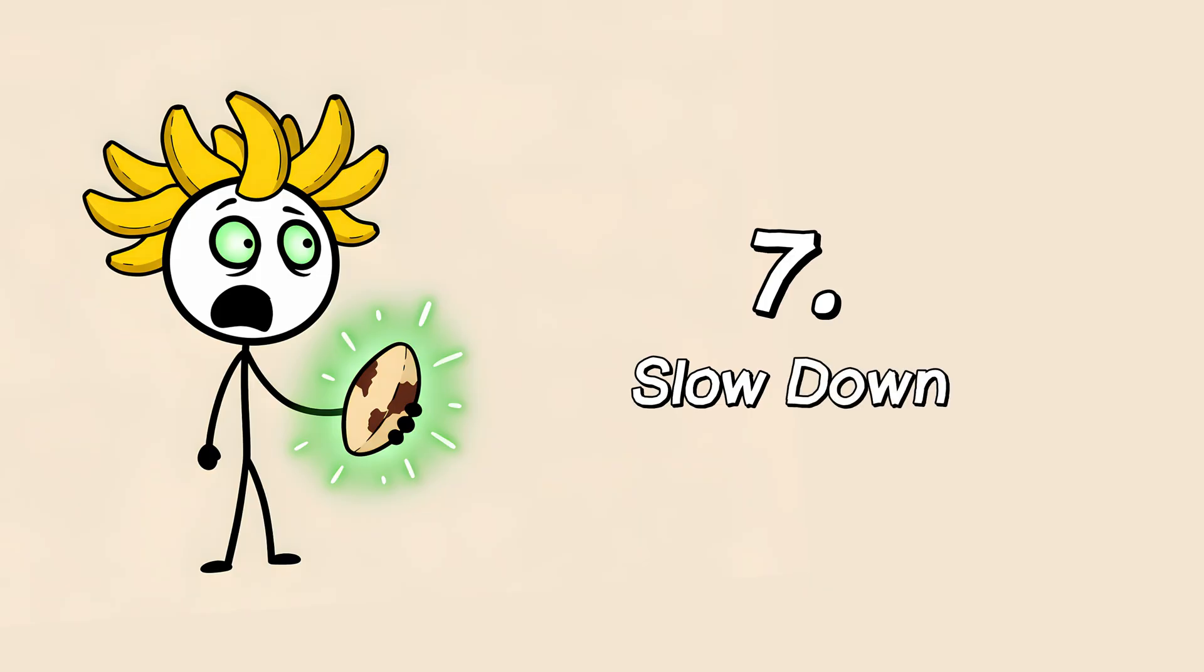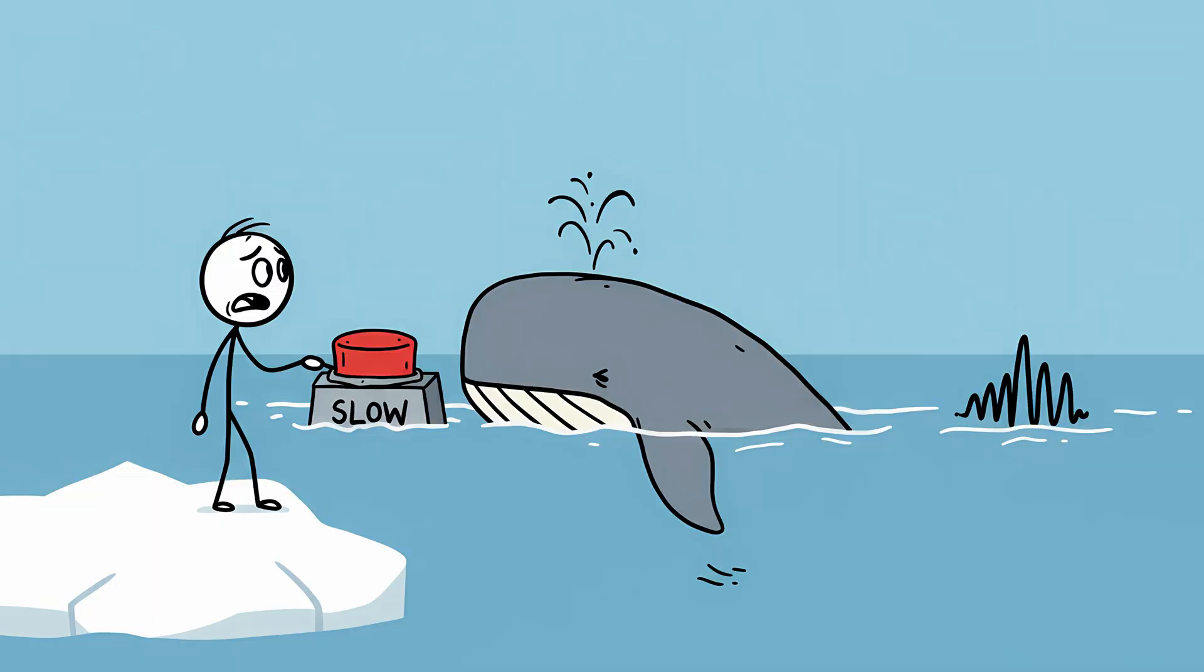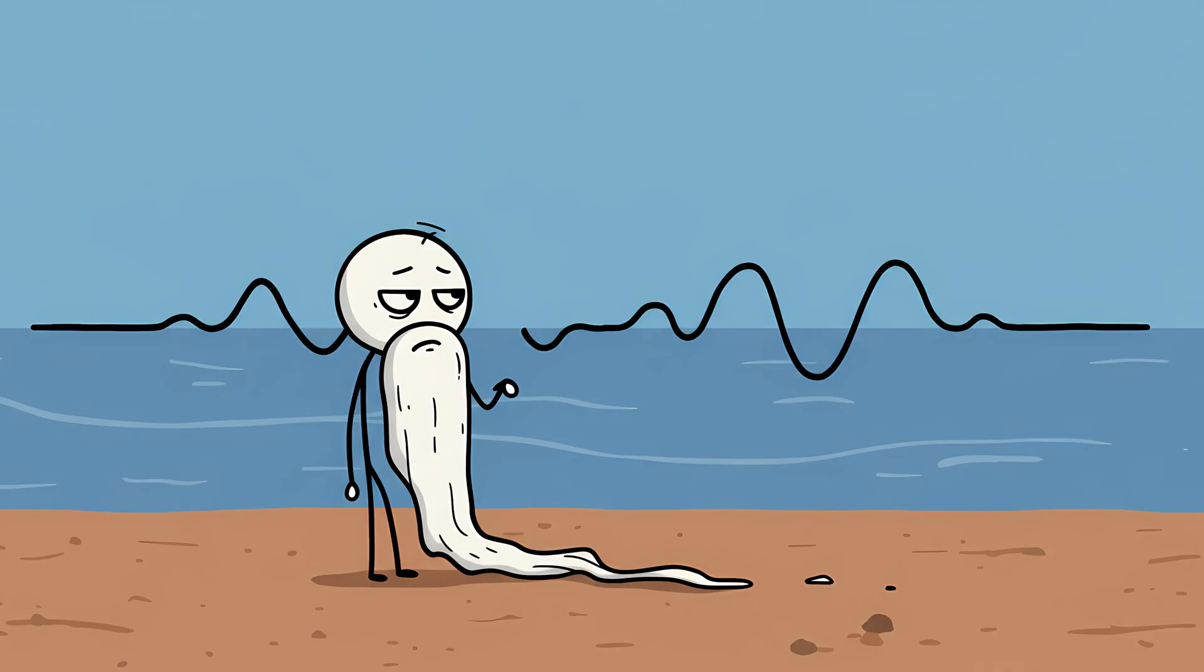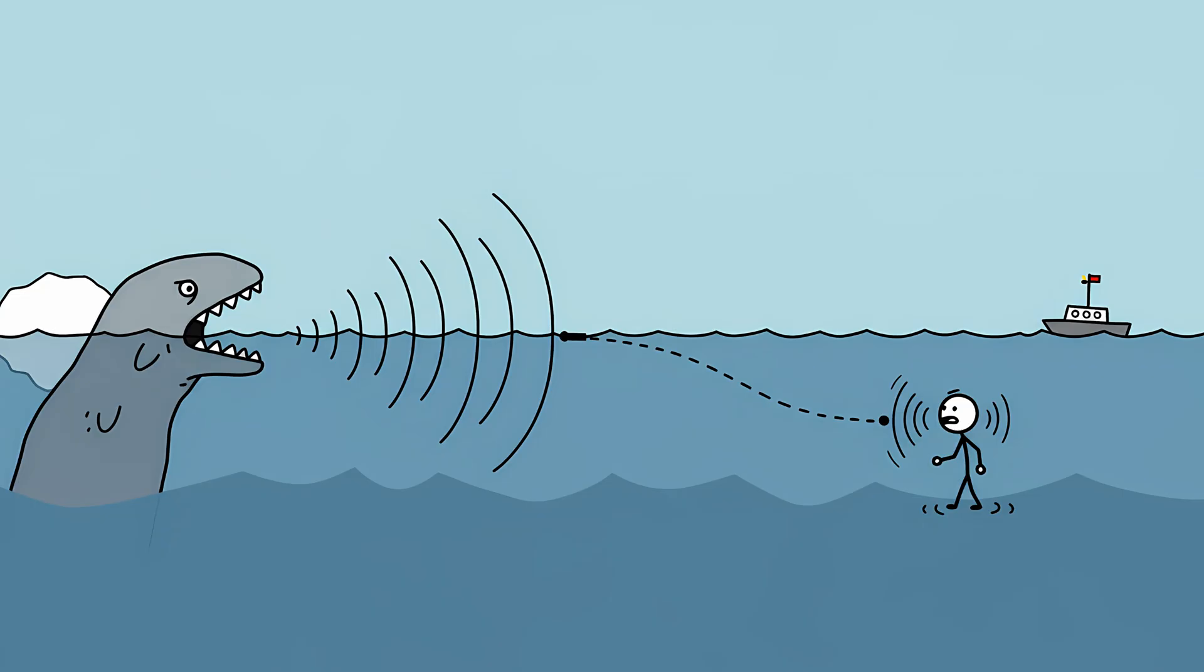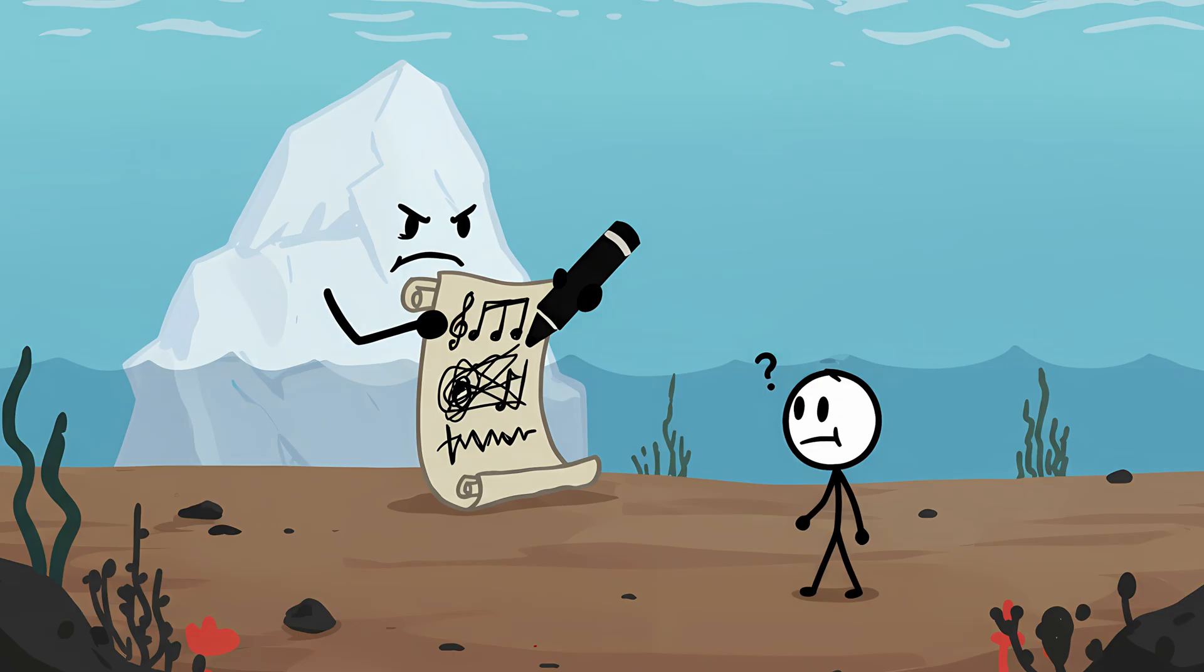Number 7: Slowdown. In 1997, yep, same year as the Bloop, because apparently the ocean was in a mood, hydrophones picked up something nicknamed slowdown. Imagine a creepy tape recorder noise that starts high pitched and then drags lower, like somebody pressing the slow motion button on a whale song. It lasted for several minutes, which in ocean sound terms is basically an eternity. And guess what? It was so powerful, it was detected over 3000 kilometers away. Again, iceberg theory shows up like the world's most boring cover story.